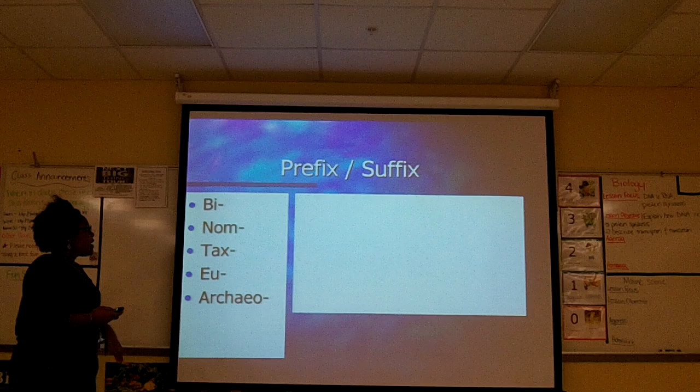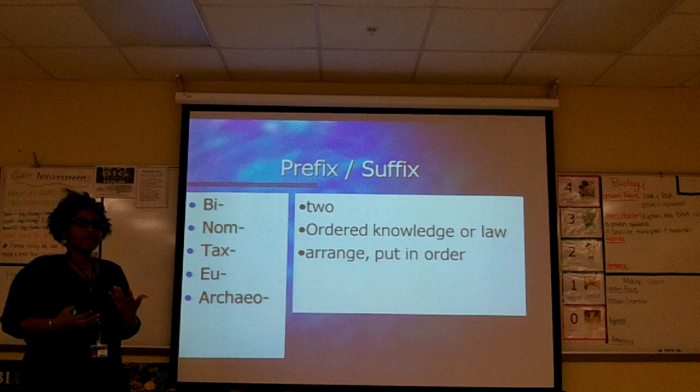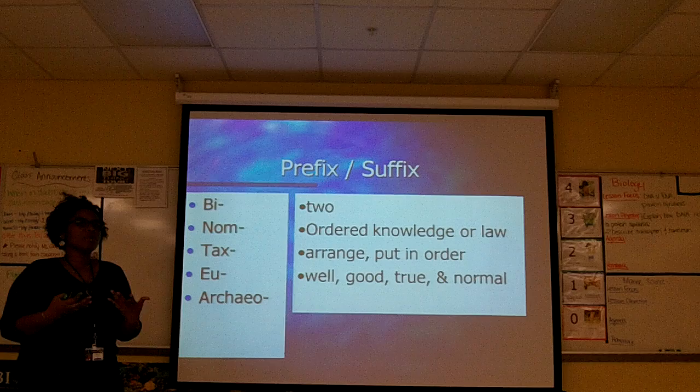So 'bi' typically refers to two. 'Nom' or 'gnome' means ordered knowledge or law. 'Tax' means to arrange or put in order. 'U' means good, true, and normal. And 'archaio' typically refers to anything that's primitive or ancient.